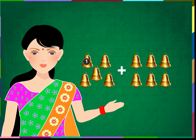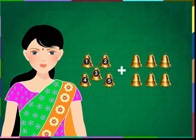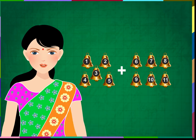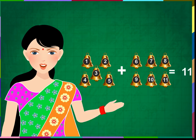Let us count the bells and add. Counting: 1, 2, 3, 4, 5, 6, 7, 8, 9, 10, 11. Five bells and 6 bells make 11 bells.